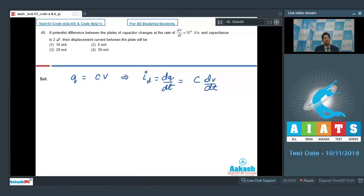Herein, dv/dt is given to be 10^4 and C is 2 microfarads. On substituting the values we get 2×10^-6 × 10^4 = 2×10^-2 or 20 milliamperes. Hence, option number 3 for this question is the correct answer.